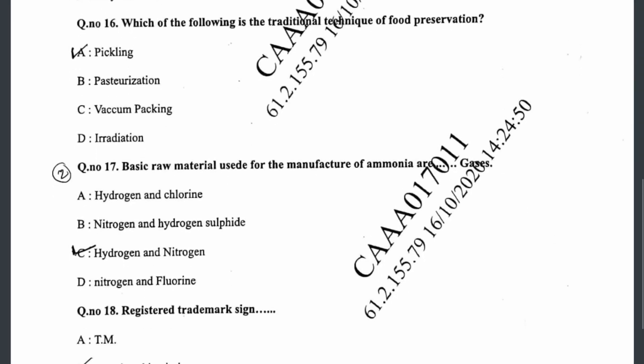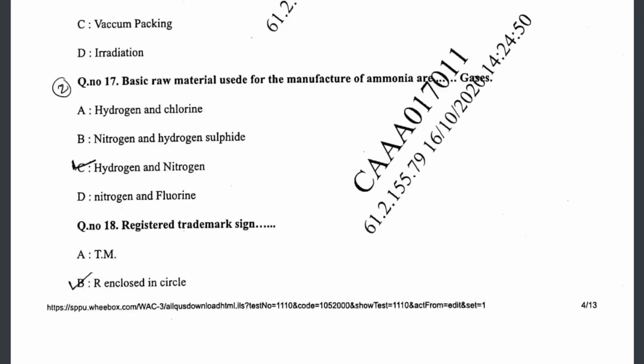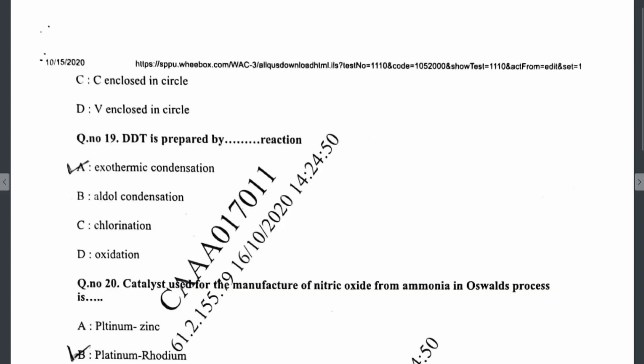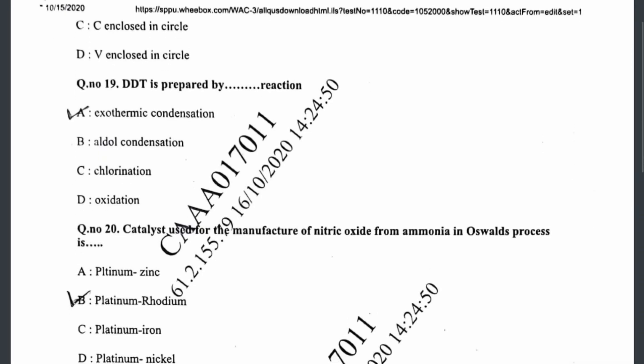Question seventeen: the basic raw materials used for manufacturing of ammonia are hydrogen and nitrogen gases. Question eighteen: the registered trademark sign is R encircled. Question nineteen: DDT is prepared by an exothermic condensation reaction. Question twenty: the catalyst used for the manufacture of nitric oxide from ammonia in the Oswald's process is the platinum-rhodium catalyst.